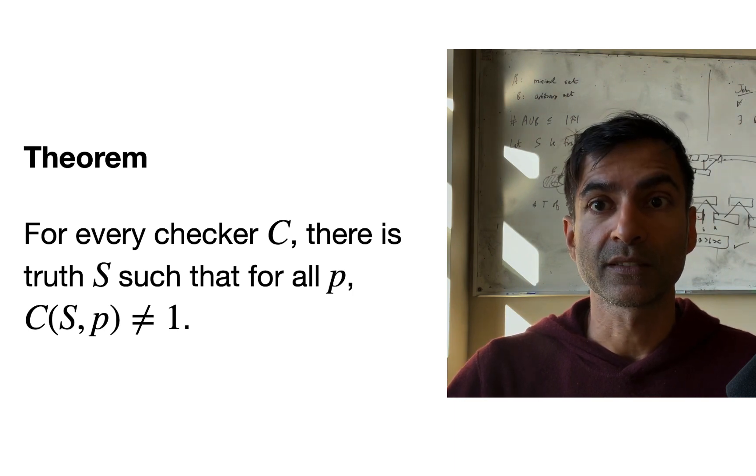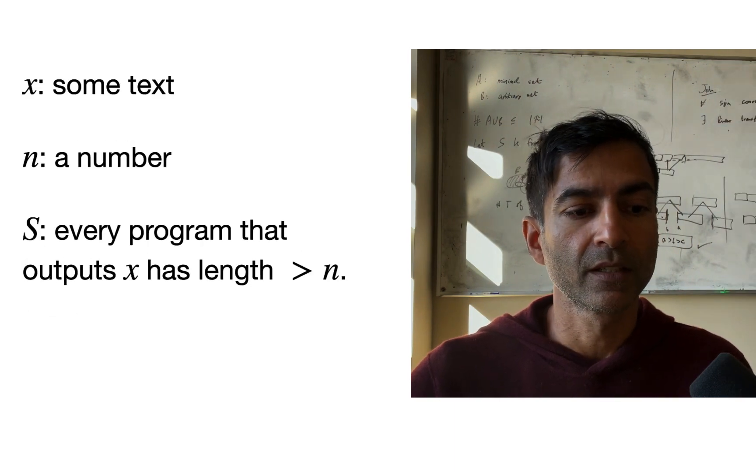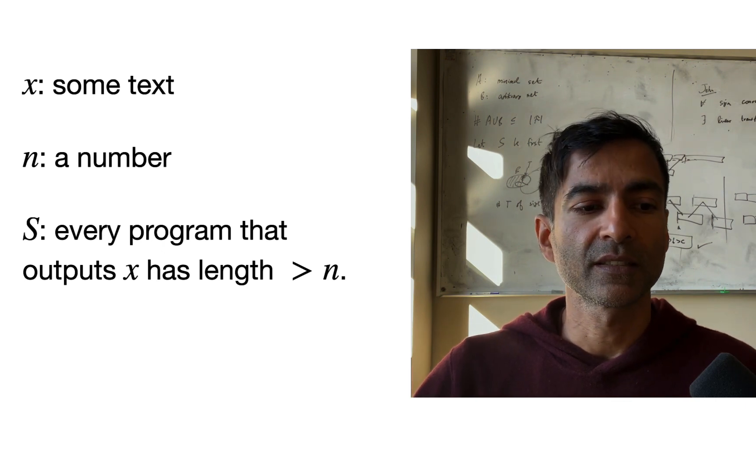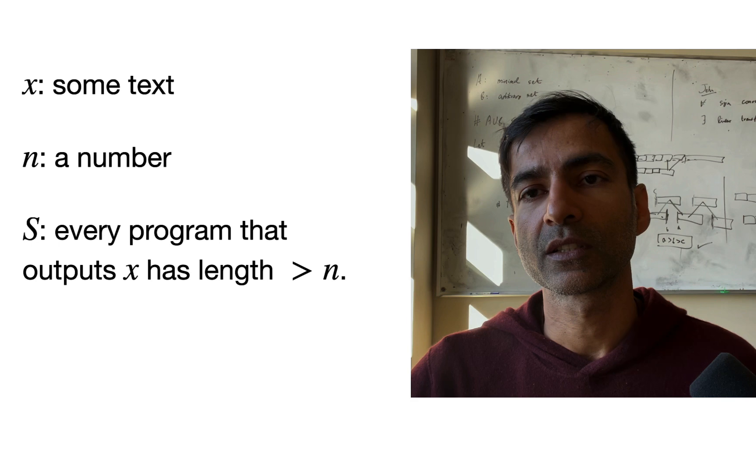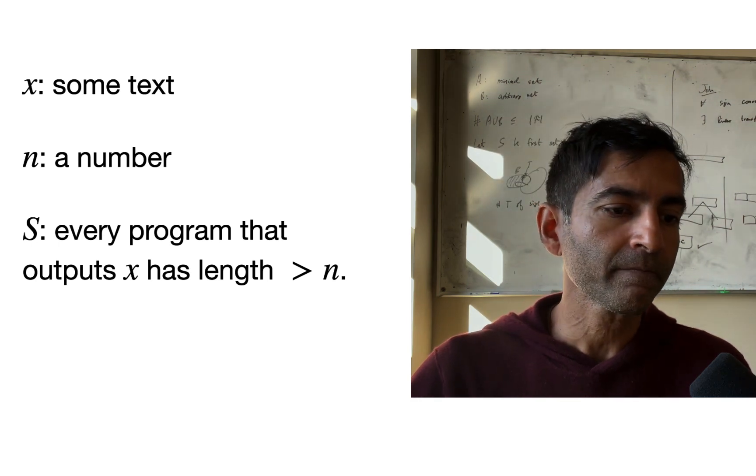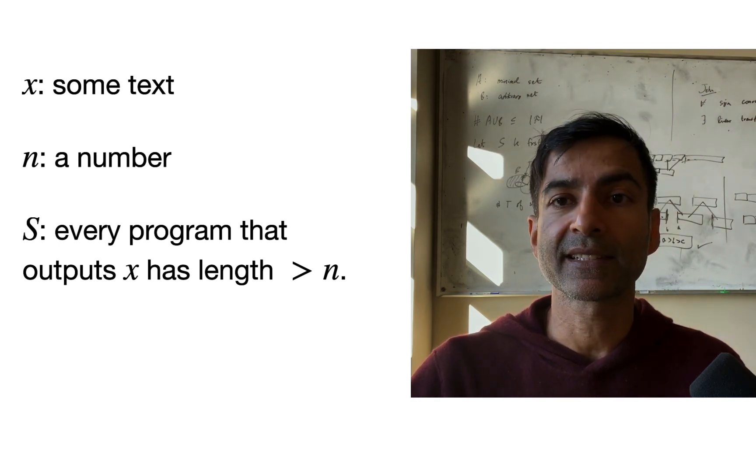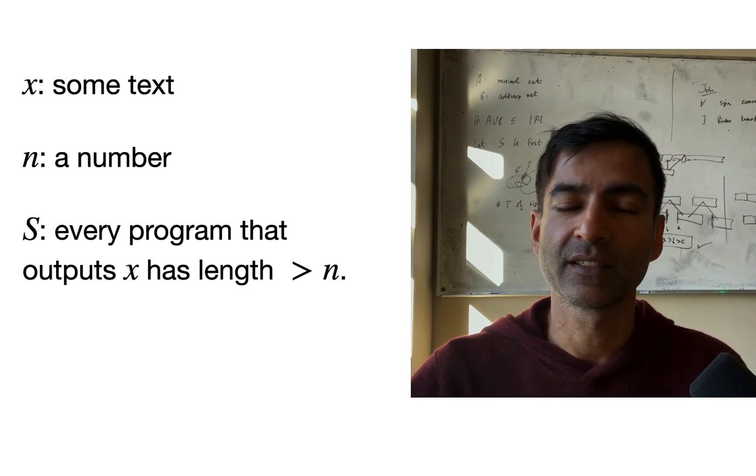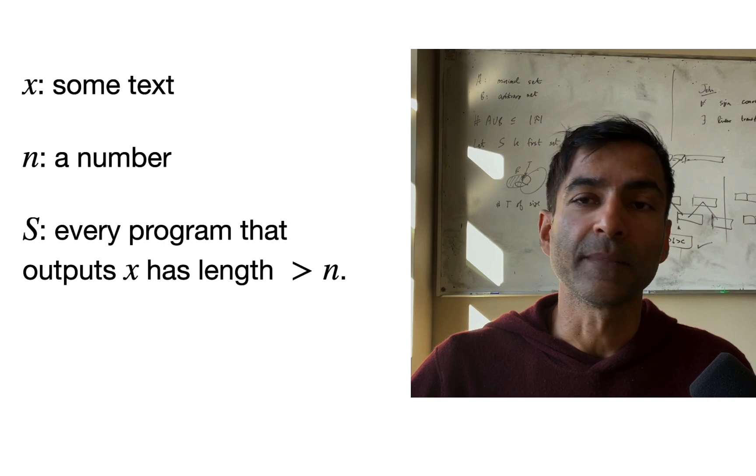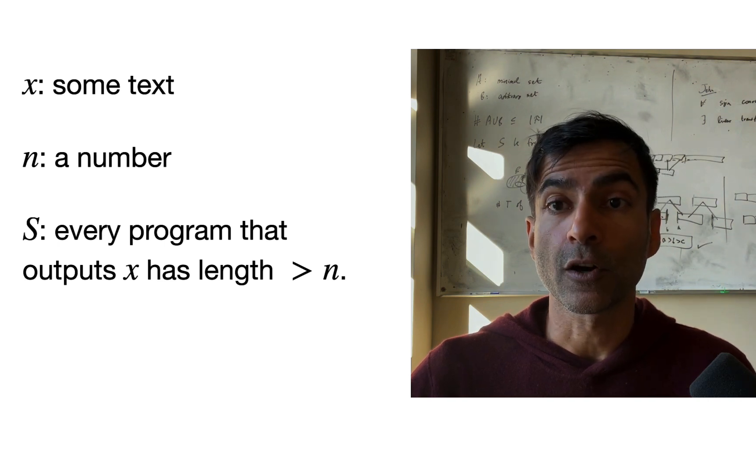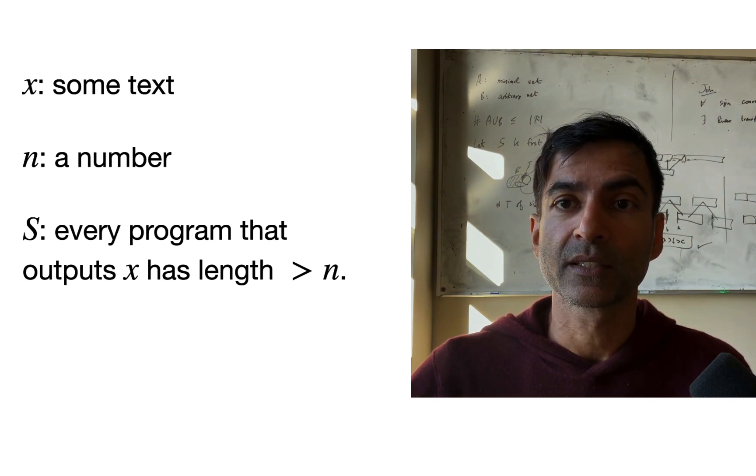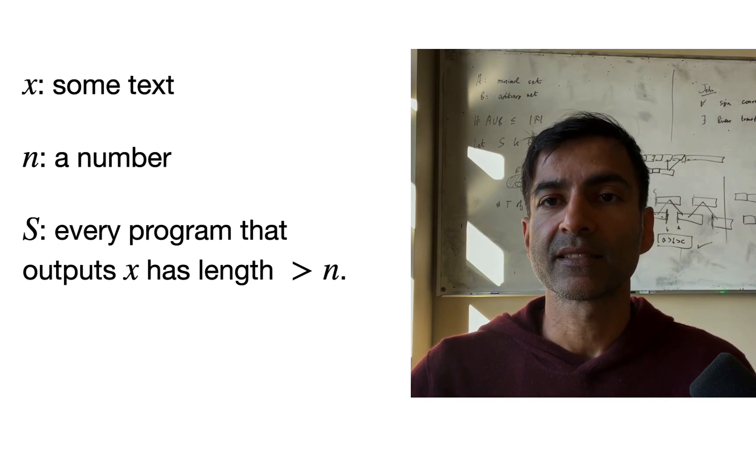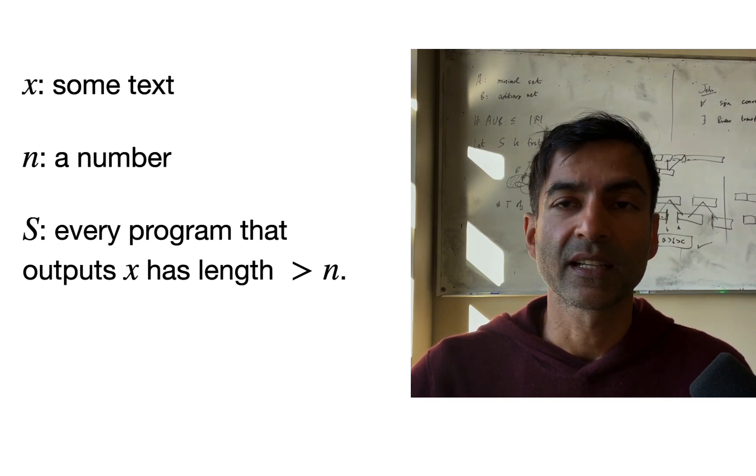So that's the statement of the theorem, and now let me prove that it's true. So to prove that it's true, the proof will concern a few objects. Throughout, let x be some long text, a long string. And think of n as a very large number. n is a very large number.